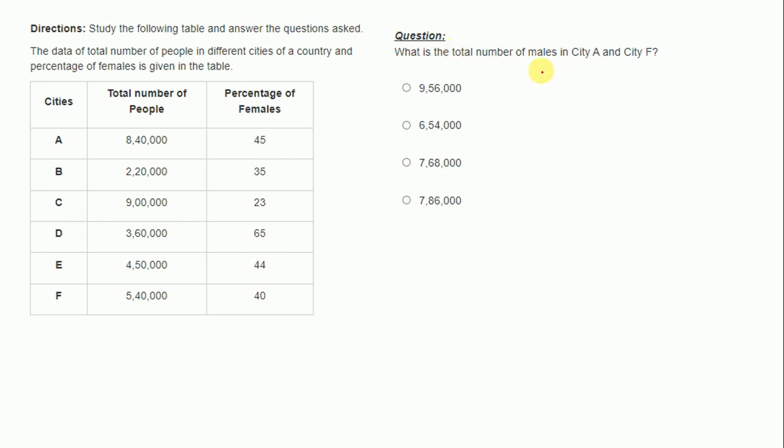What is the total number of males in city A and city F? Total people in city A is 840,000 and the percentage of males is 55, as the percentage of females given is 45. For city F, percentage of males will be 60 and total people are 540,000.